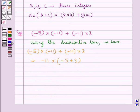And so, this would be equal to minus 11 multiplied by minus 2. Since minus 5 plus 3 is minus 2. And this would be equal to 22.